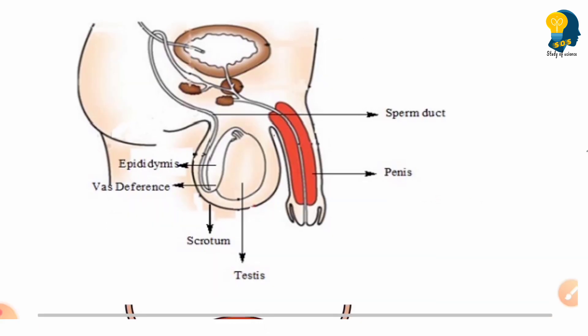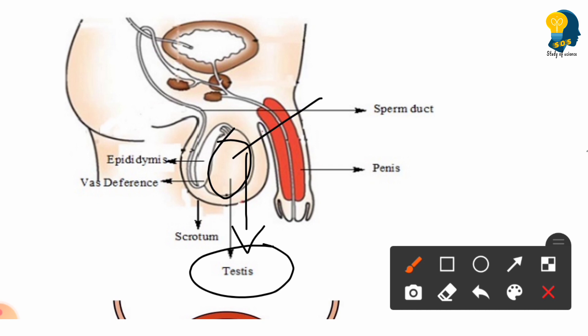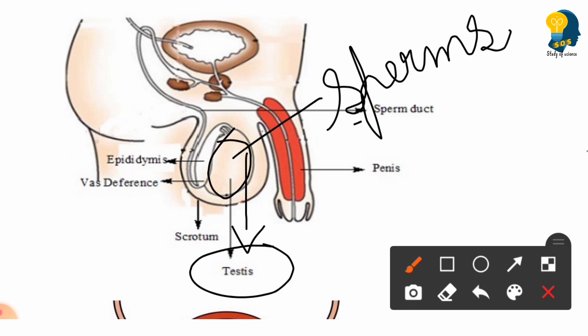The first and most important part of the human male reproductive system is the testis. You can observe an oval-like structure here — this oval-like structure is called the testis. It is important because it produces the male sex cells, which are called sperms. The sperms are released inside the testis.